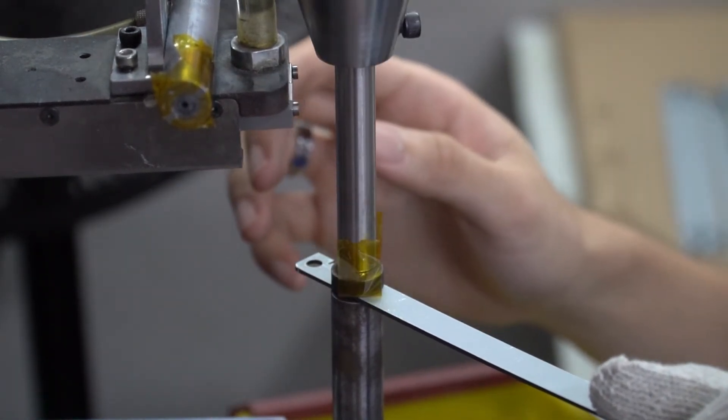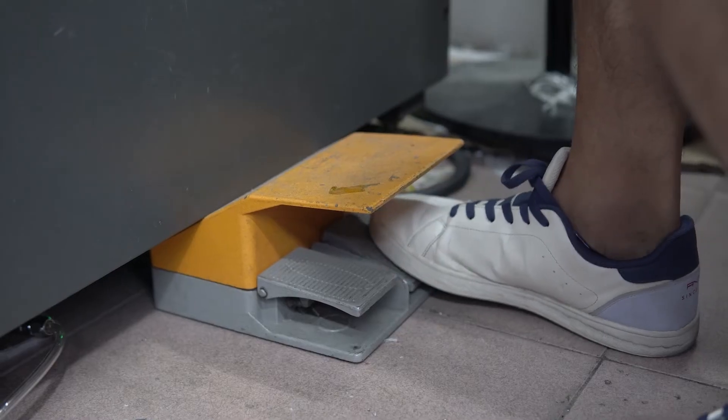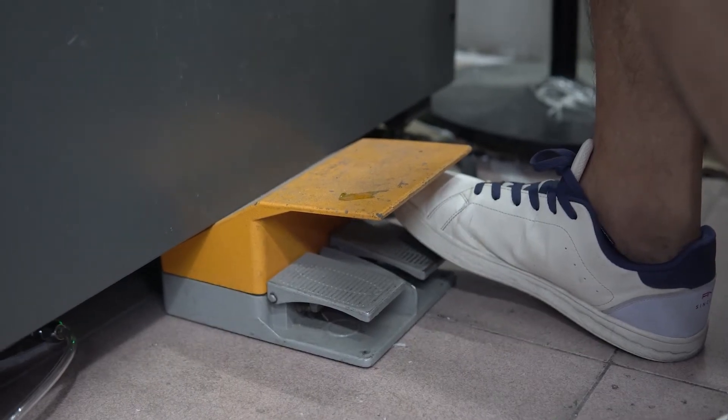step on the pedal and the riveting machine will slowly descend. Step on it again to press rivet. This completes the pressure riveting.